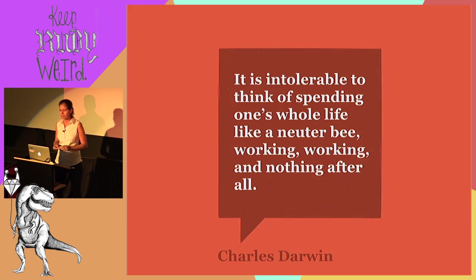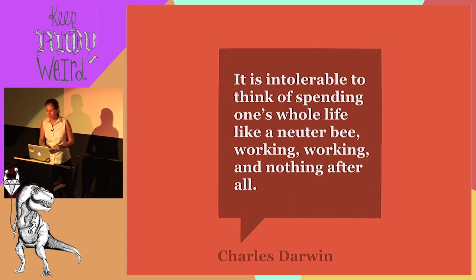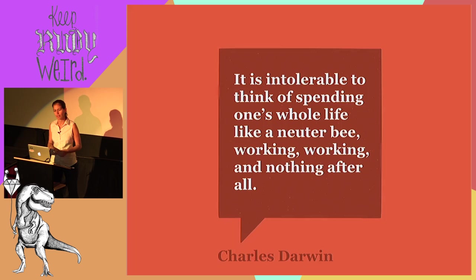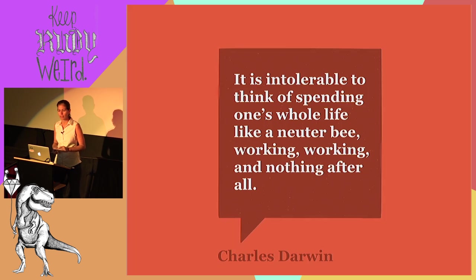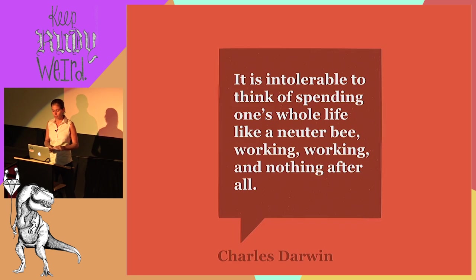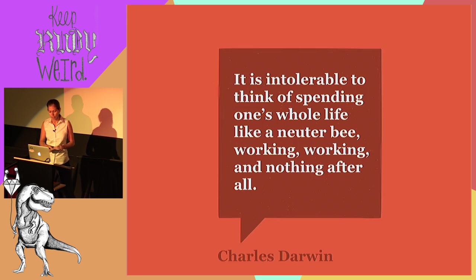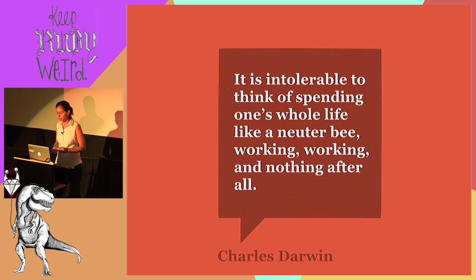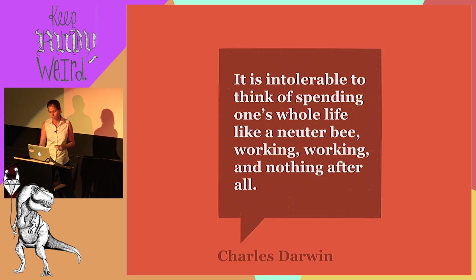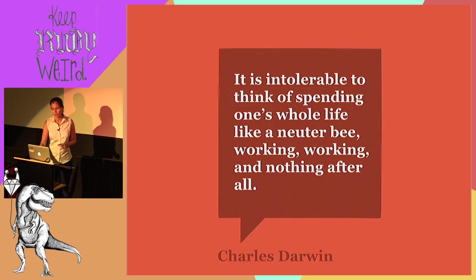Going back to Darwin — deciding whether to propose could probably have been resolved based on just the first few pros and cons. Darwin identified that subsequent ones added time and anxiety, expanding the decision without necessarily aiding its resolution. What ultimately made up his mind was the thought that it was intolerable to spend one's whole life like a neuter bee, working and nothing after all. Children and companionship — the very first few points he listed — were precisely those that ultimately swayed him in favor of marriage. His book budget was a distraction after all.